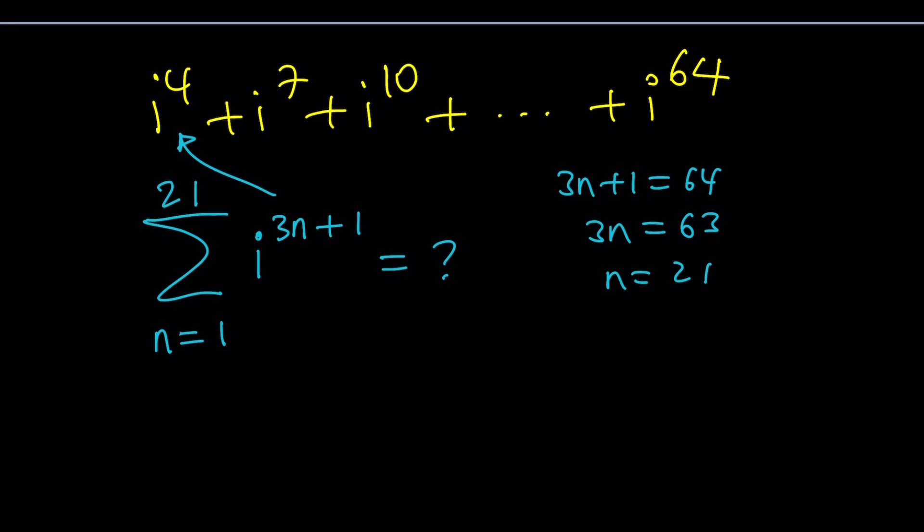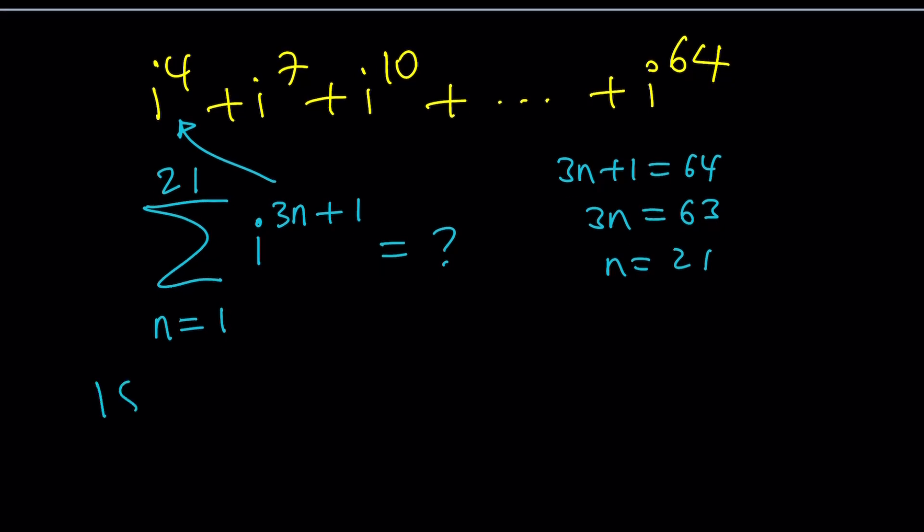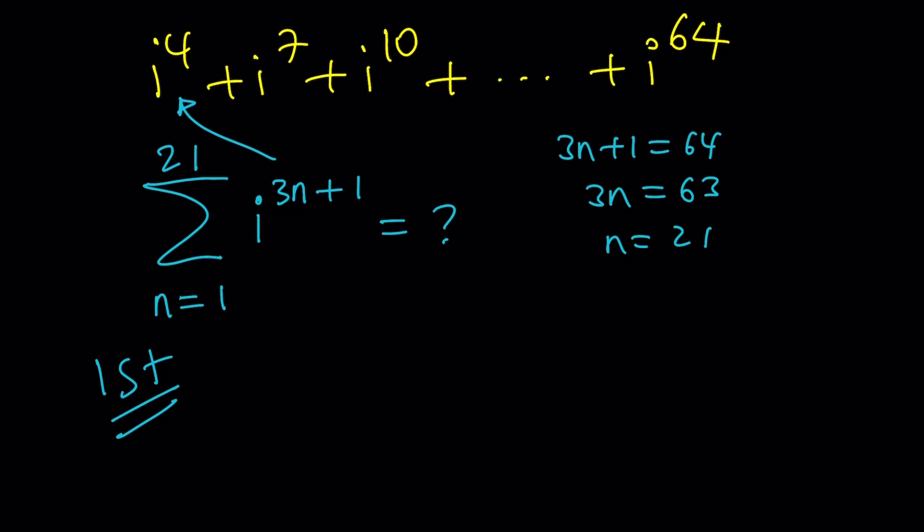Let's go ahead and see how we can solve this problem with the first method first. Now, to solve this problem, we're going to look at the following. What is i to the 4th? 1. Great. Is i to the 7th one as well? No. i to the 10th? No. What about i to the 13th? That's not 1 either. Wait a minute. Will we ever get 1? Of course. i to the power 64 is also 1, but how often do you get it? So let's go ahead and come up with a pattern.